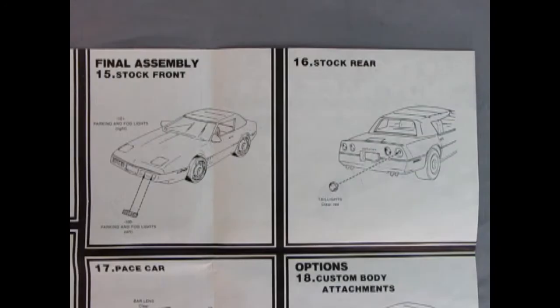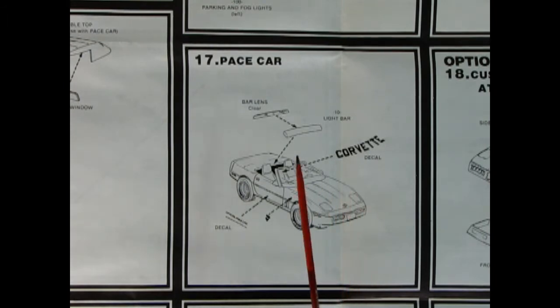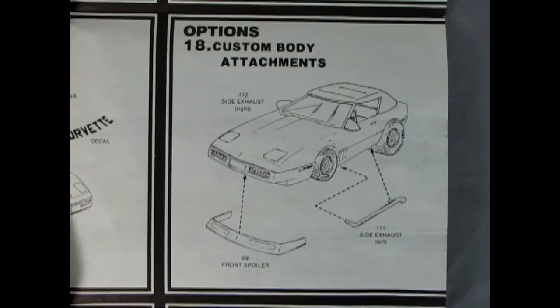Panels fifteen and sixteen show the front and back of the car and the parts you need to finish that off. You've got your parking and fog lamps gluing into place and our four red tail lights going on there. Panel seventeen shows the pace car bits. Oh, here's what I was talking about - maybe it wasn't a roll bar after all, but you do get the bar lens and light bar. That'll glue together and glue right on the back. Then there's your official pace car decals and the Corvette decal going across on the windshield.